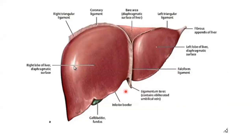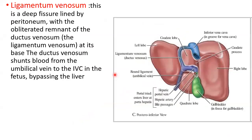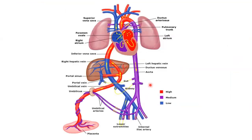The ligamentum teres is a remnant of the obliterated umbilical vein. The ligamentum venosum is a remnant of the ductus venosus. In fetal circulation, the ductus venosus shunts blood from the umbilical vein to the IVC, bypassing the liver.